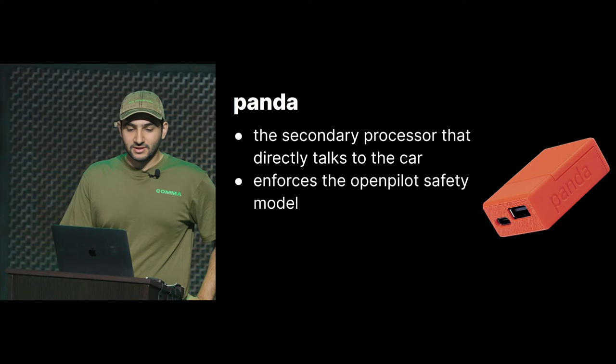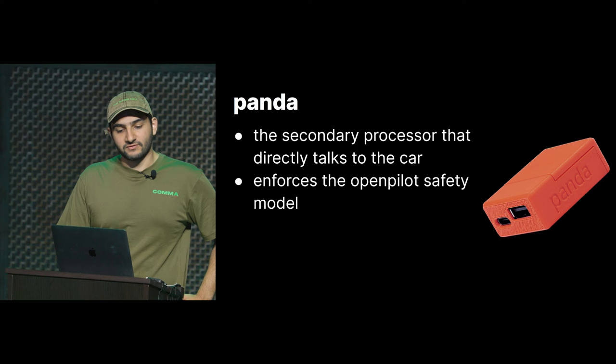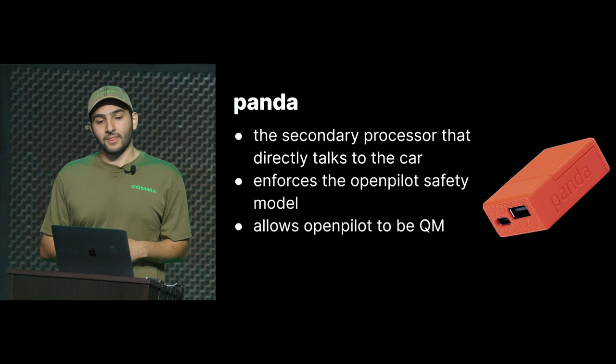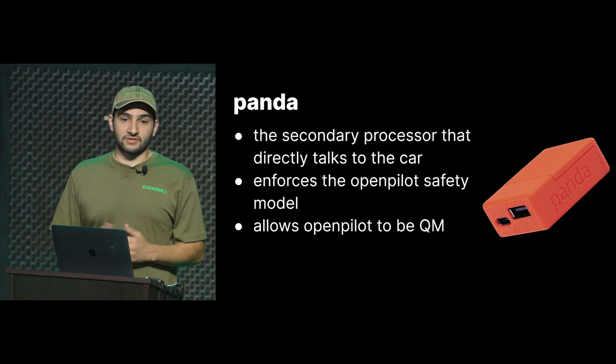The Panda has all the code that enforces safety, and it allows OpenPilot to be something called QM. There's a framework for thinking about safety called ASIL — Automotive Safety Integrity Level — and there's something below the ASIL ratings called QM, which stands for Quality Management. Anything OpenPilot wants to do, as long as it's constrained properly by the Panda safety, is considered bad quality rather than a safety failure. When talking about OpenPilot safety, first read the safety model, then ask: is the Panda properly enforcing it? That provides very specific language to talk about this, and we're quite strict about how we communicate it.